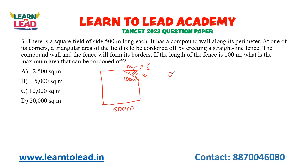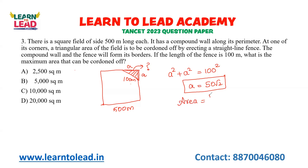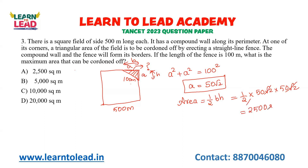Applying the Pythagorean theorem: A² + A² = 100², so 2A² = 10000, giving A = 50√2. The area of the triangle is ½ × base × height = ½ × 50√2 × 50√2. The √2 × √2 = 2, so area = ½ × 50 × 50 × 2 = 2500 square meters will be cordoned off.